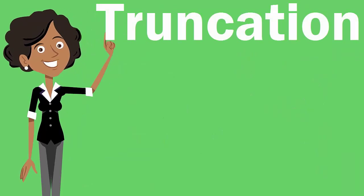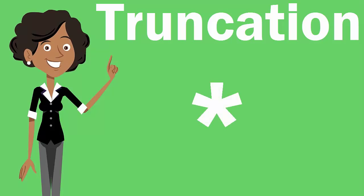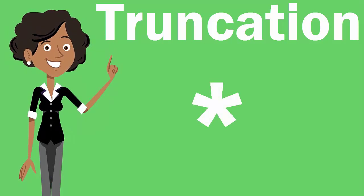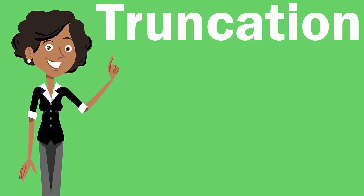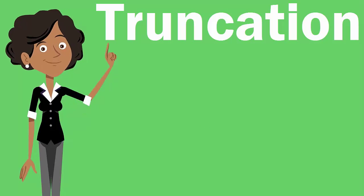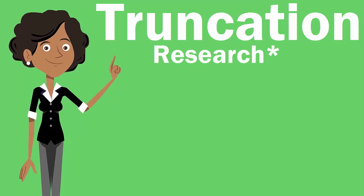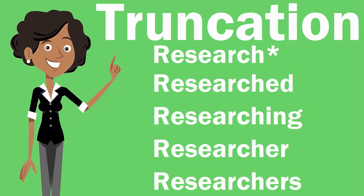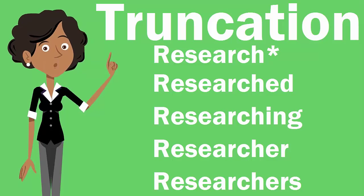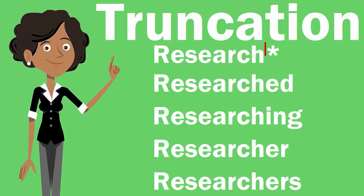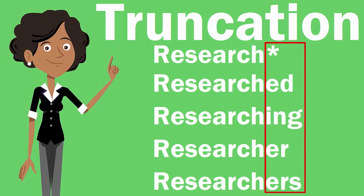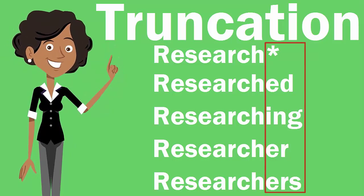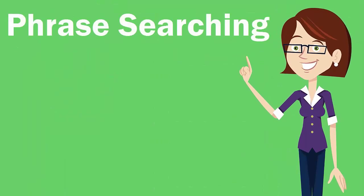Truncation is a search technique using the asterisk, where your search results would include various word endings. For example, 'research*' with an asterisk at the end will find 'researched', 'researching', 'researcher', and 'researchers'.